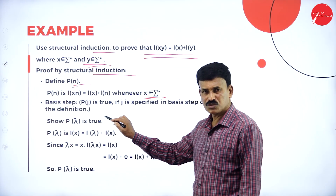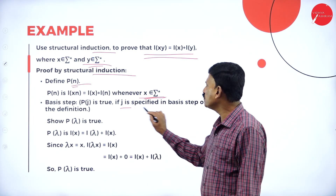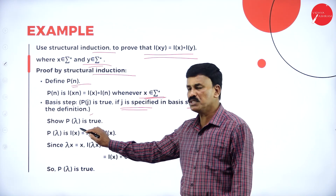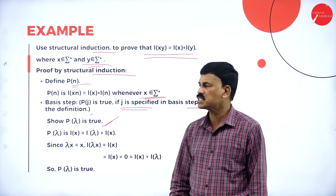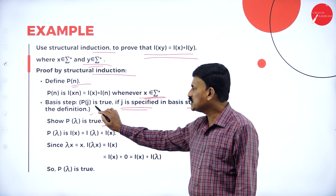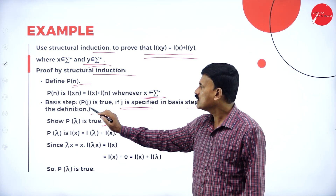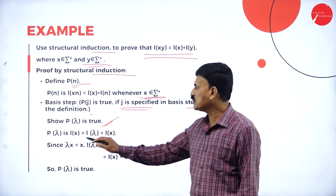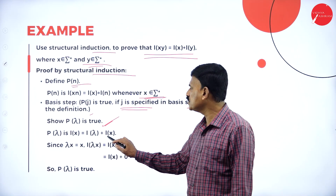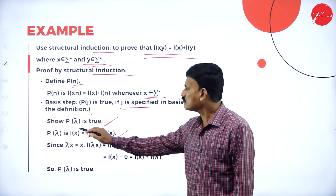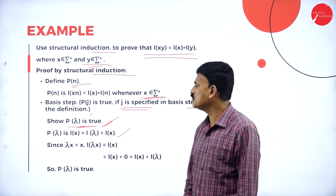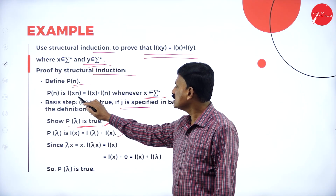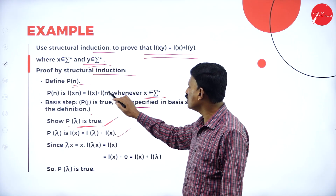Basic step: P(J) is true if J is specified in the basic step of the definition. We need to show that P(λ) is also true. First, verify P(J) is true if J is specified in the basic step, then show P(λ) is true.